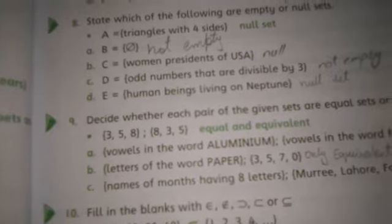In part C, C is equal to woman presidents of USA. As we know that there is no woman president of USA, so it is also a null set.